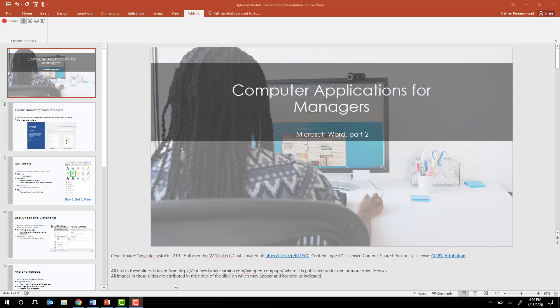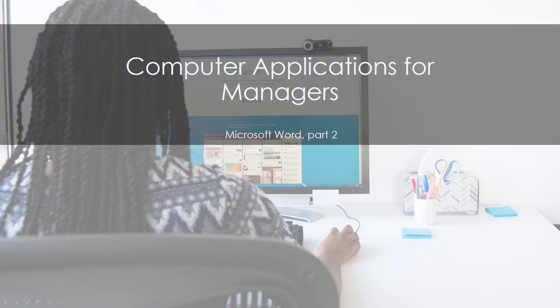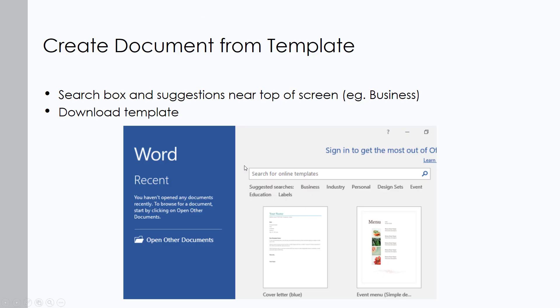In today's lesson we're going to be discussing Word Module 2, or Word Part 2 out of 3. We're going to be getting into some modifications of our paragraphs. We did the basic stuff in the last one; this one is going to have more of a focus on additional modifications to start changing the appearance to have a better look and feel.